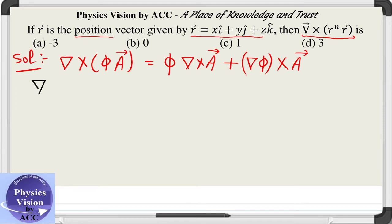Second formula we'll make use of is the gradient of r raised to the power n is n r to the power n minus 2 times r vector.